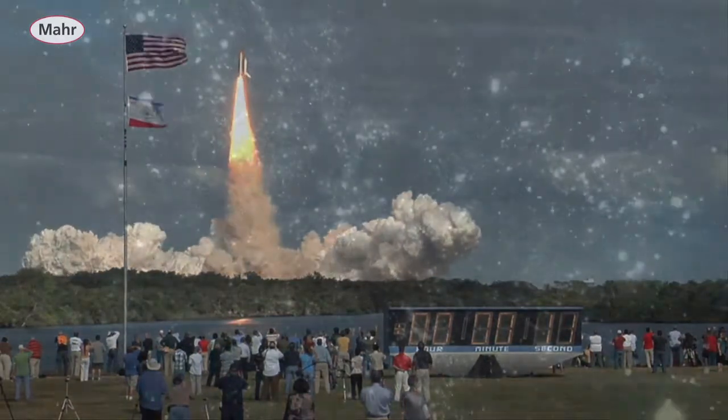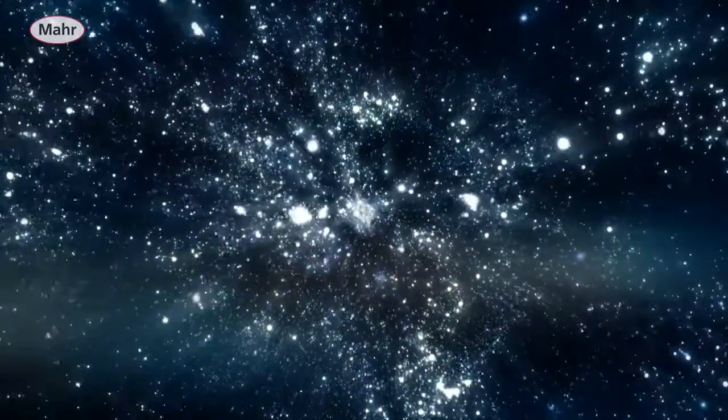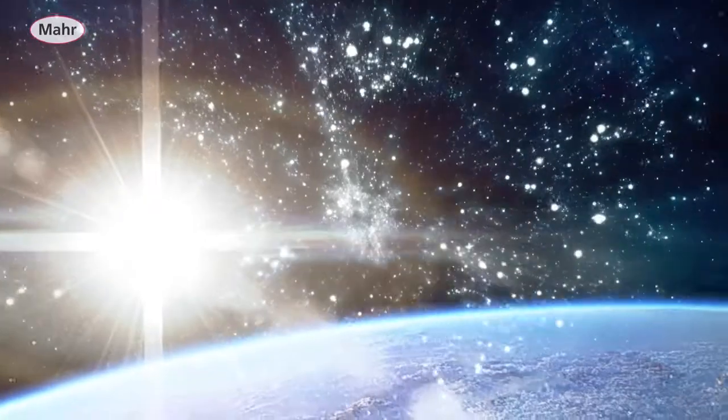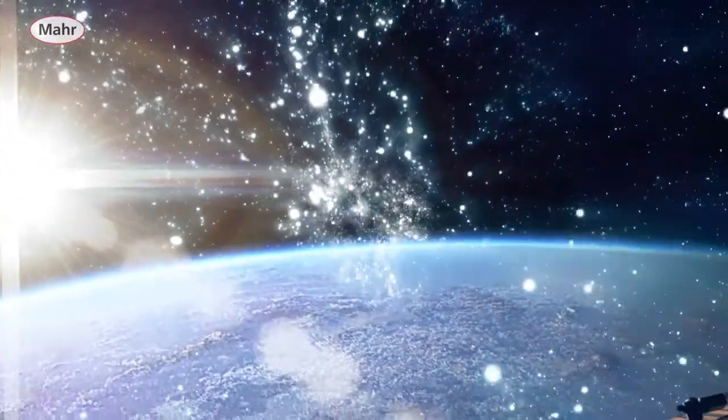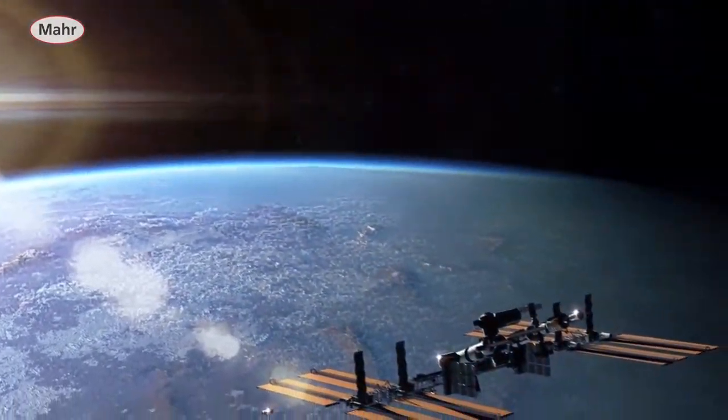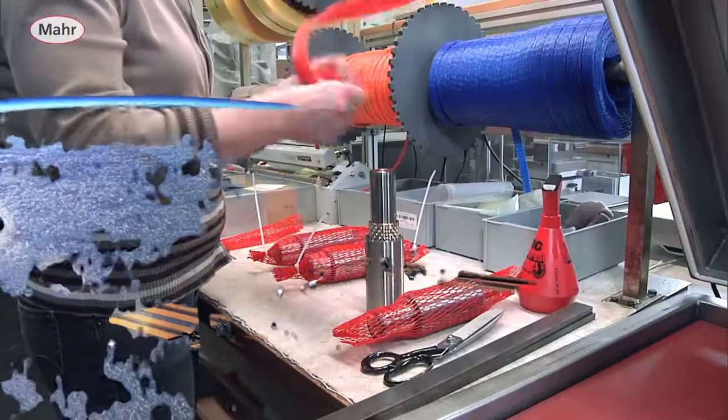MAR motion high-precision rotary stroke bearings have even reached outer space and are used for precise movements in aerospace technology. For example, the rotary stroke bearings from Göttingen have been in use for more than 15 years on board the SOHO space probe, reliably and maintenance-free. And also on the International Space Station ISS, MAR motion high-precision rotary stroke bearings are on board.